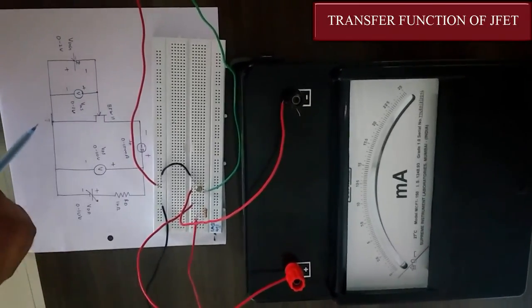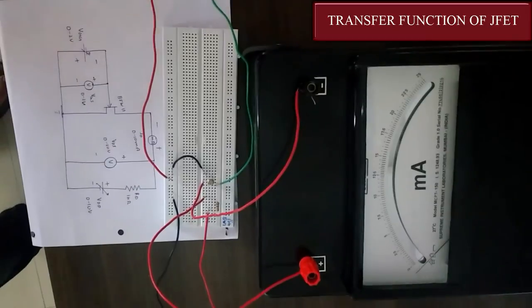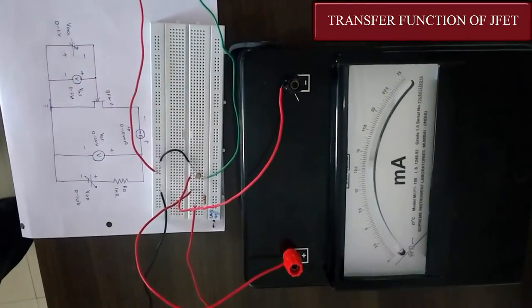Now the gate is directly grounded. That's it for the circuit. Now let us apply the voltages and see the output.